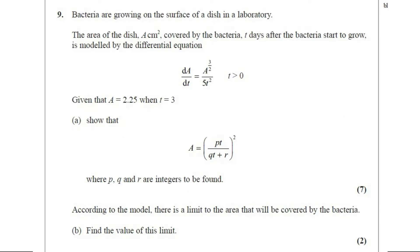Question number 9. Bacteria are growing on the surface of a dish in a laboratory. The area of the dish a centimeter square covered by the bacteria, t days after the bacteria starts to grow, is modeled by the differential equation dA upon dt equals a to the power 3 by 2 divided by 5t square. Given that a is 2.25 when t equals 3.